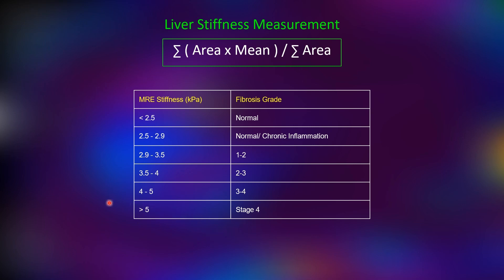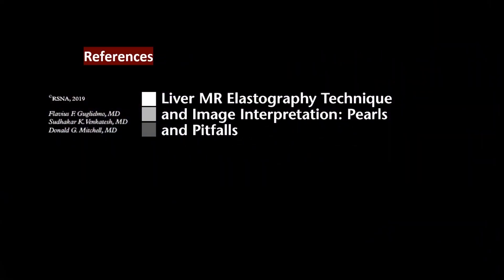Above 5 kPa is considered stage 4 fibrosis. You can refer to the referenced article if you want to read more about this.